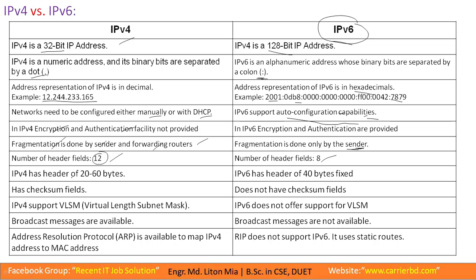IPv4 has 12 header fields and IPv6 has 8 header fields. The IPv4 header size is 20 bytes variable, while the IPv6 header is a fixed 40 bytes. IPv4 supports a checksum field, but IPv6 does not have a checksum field in its header.